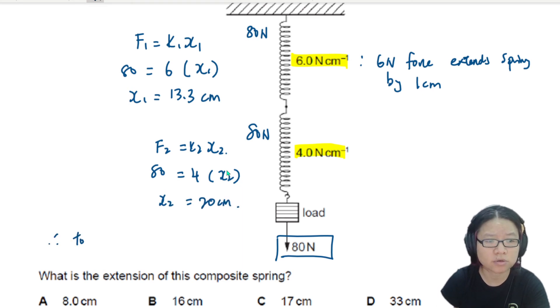So hence, total extension will be 13.3 plus 20, which is 33 cm. That's all.